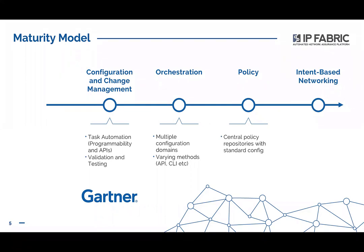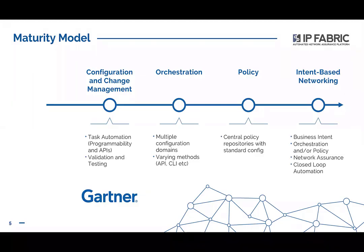Then we introduce intent-based networking — the next iteration in which you express the business intent and that intent is rendered as an orchestration workflow to deliver it, possibly with changes to a policy engine. The key difference here is that it also makes changes into the monitoring and visibility systems to validate that the network's behavior is actually in line with that intent, and creates a feedback loop to fix the network should it stray outside the boundaries.